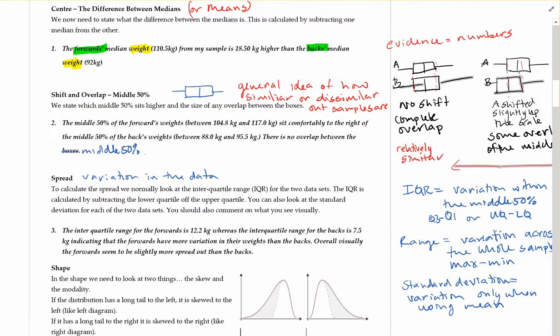So there's your interquartile range. Given your evidence, make sure you give your numbers again. The interquartile range for the forwards, being specific to the forwards, is 12.2 kgs, whereas the interquartile range for the backs is 7.5 kgs, indicating that the forwards have more variation in their weights than the backs, which is true.